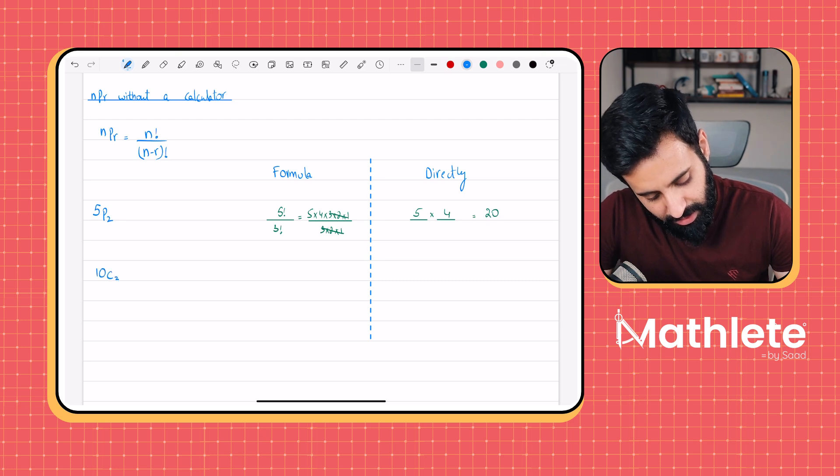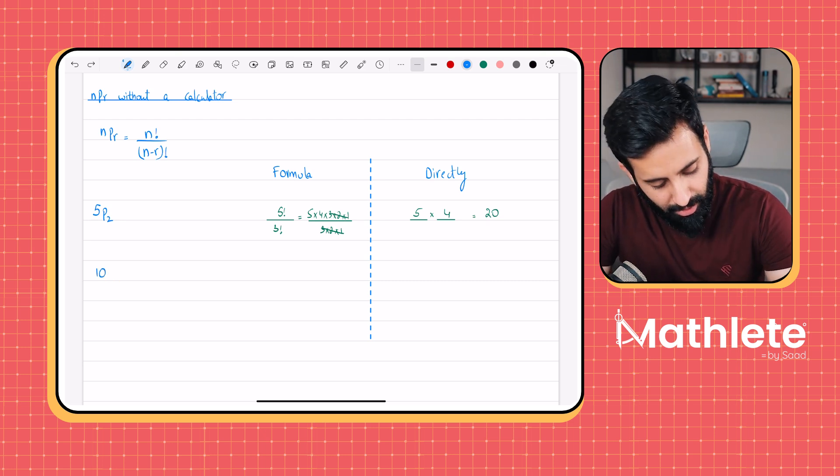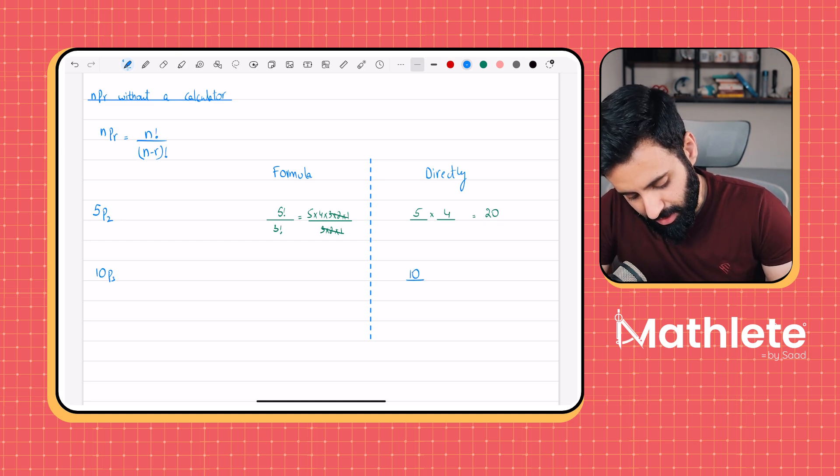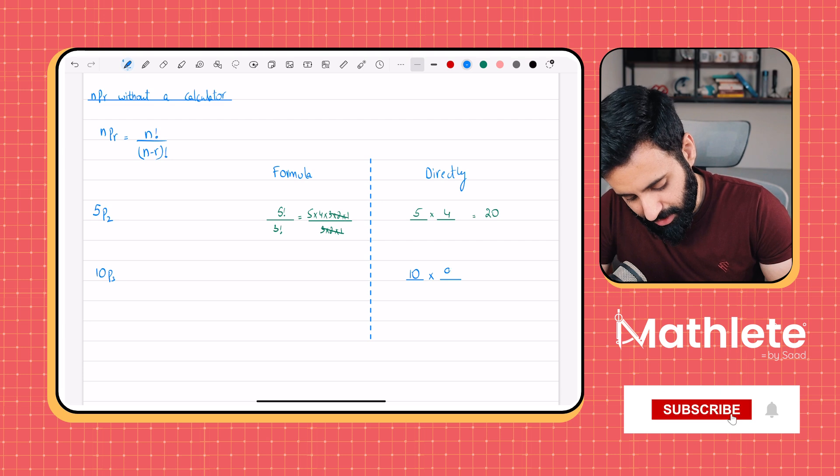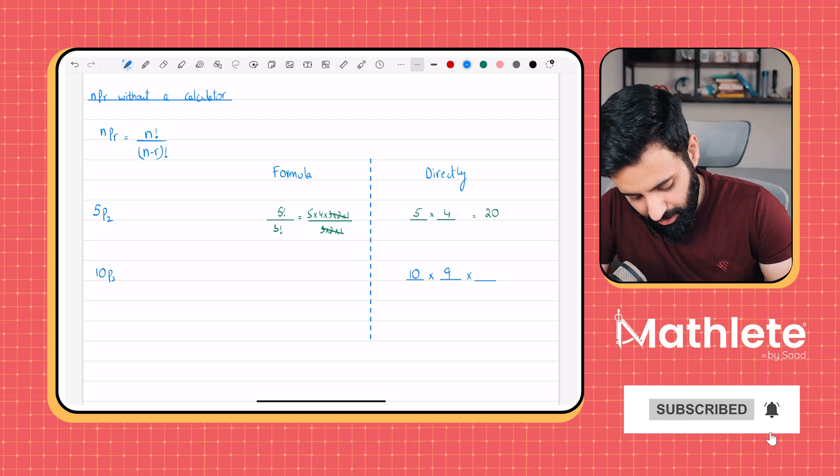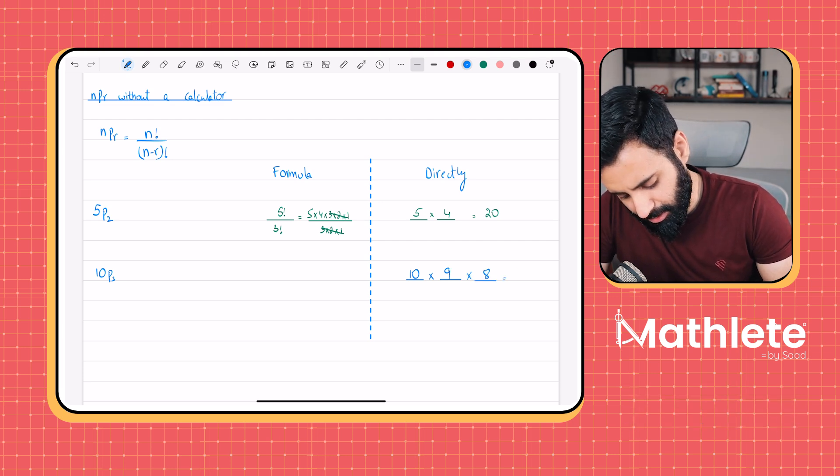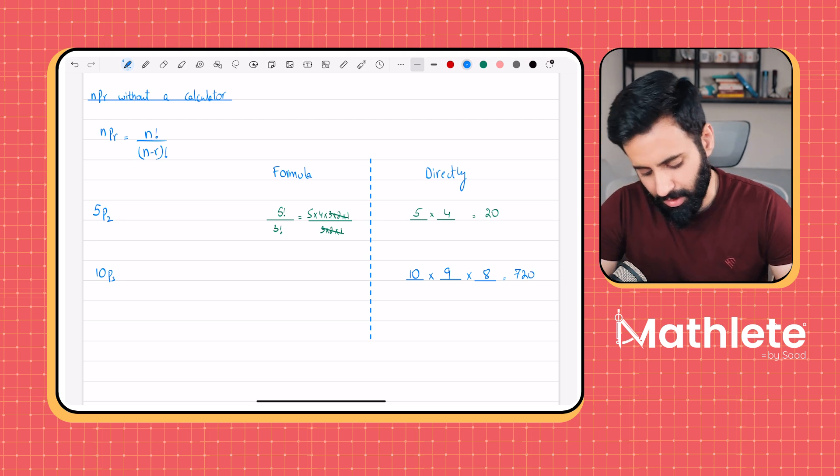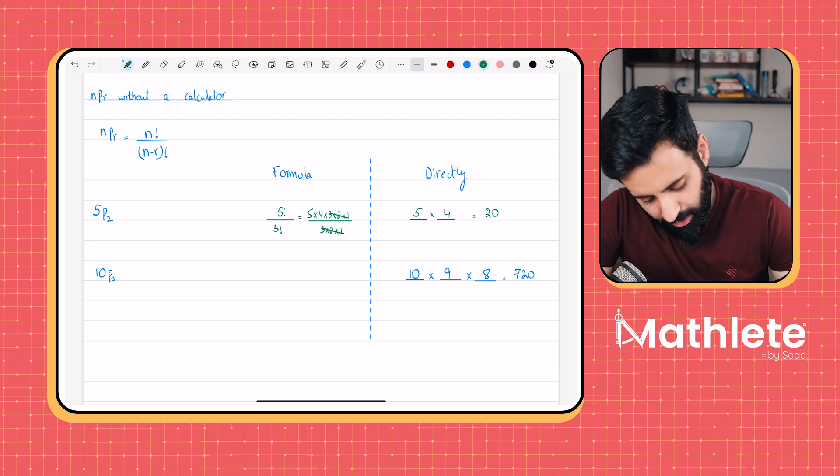If let's say you do 10P3, that basically means that you wish to arrange three objects out of 10. So that means 10 times 9 times 8, and whatever that is equal to, that's going to be equal to 720.